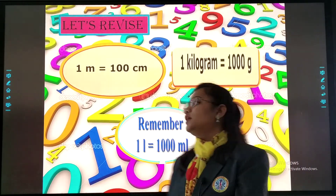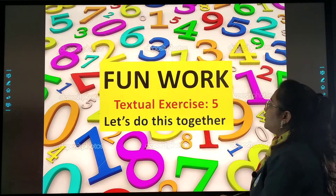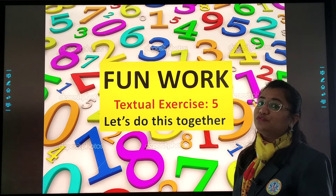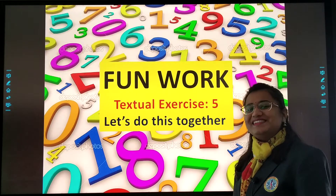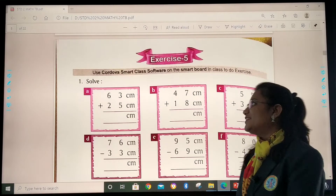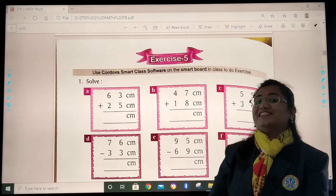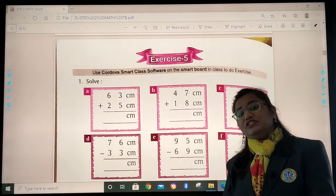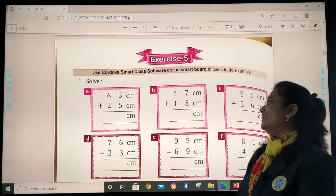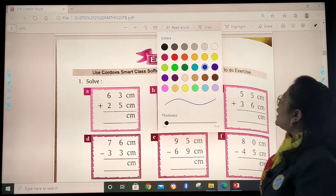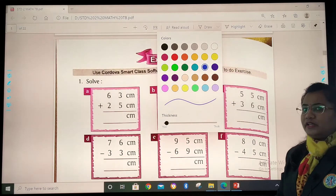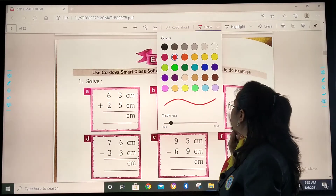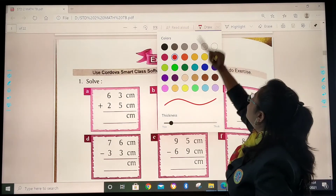Clear, dear children? Now let's move further and do this together. Our fun work: textual exercise 5. Check out your textbooks. Today we will do this together. So which color do you like? We will choose red color today. Let's move further.